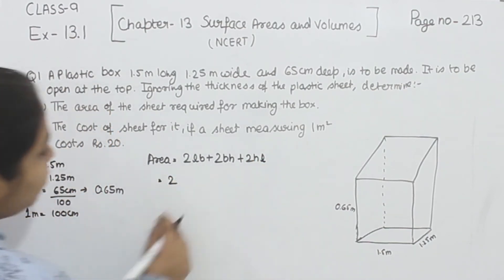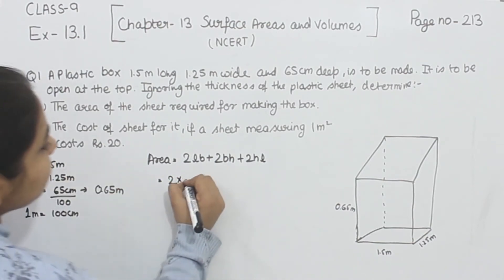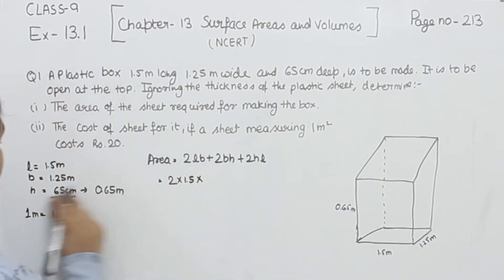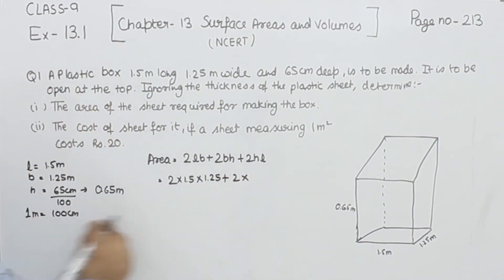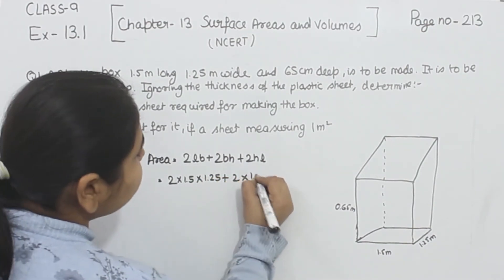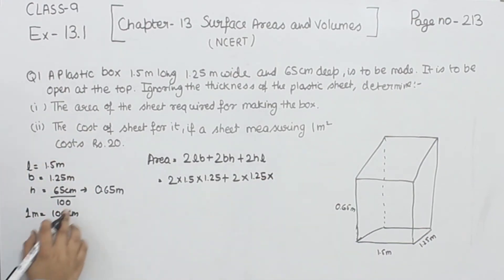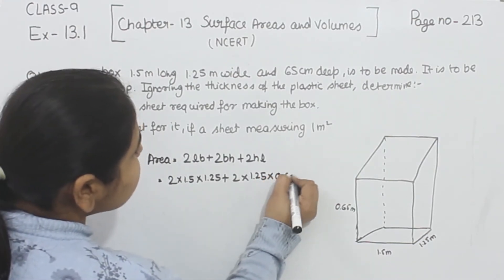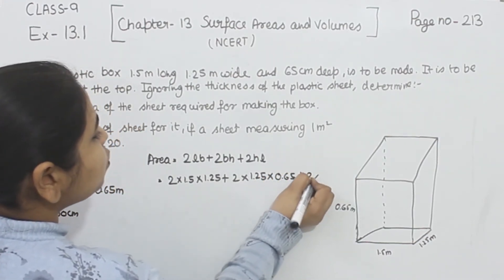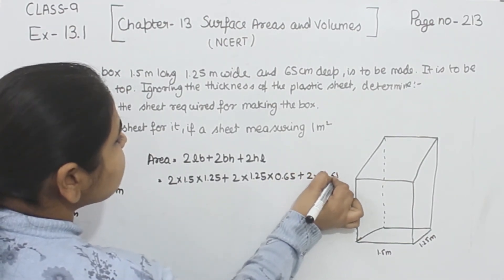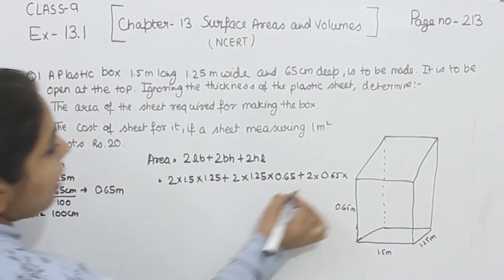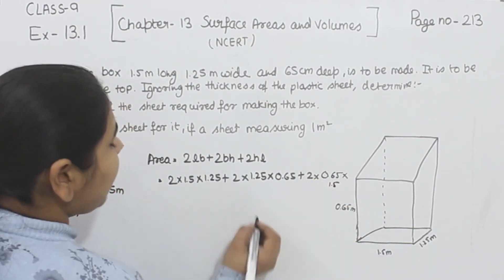We are going to substitute the values: 2 times 1.5 times 1.25, plus 2 times 1.25 times 0.65, plus 2 times 0.65 times 1.5.